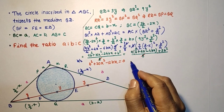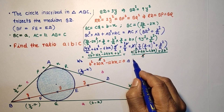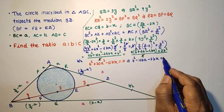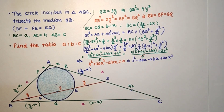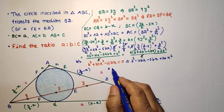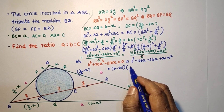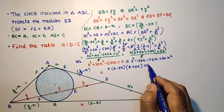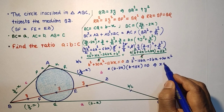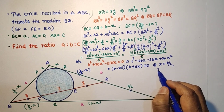Splitting the middle term: 20X² minus 10BX minus 2BX plus B² equals 0. Factoring: (B minus 2X)(B minus 10X) equals 0. This gives either X equals B/2 or X equals B/10.